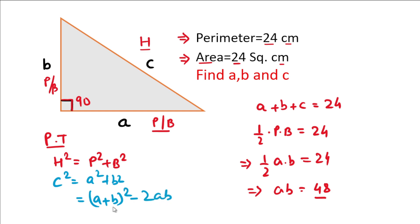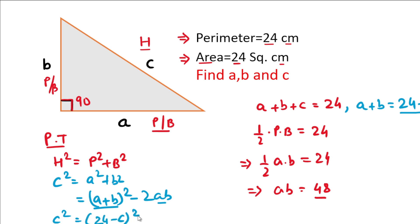We can rewrite a squared plus b squared as (a plus b) squared minus 2ab. From the perimeter equation, a plus b equals 24 minus c. Substituting, c squared equals (24 minus c) squared minus 2 times 48.